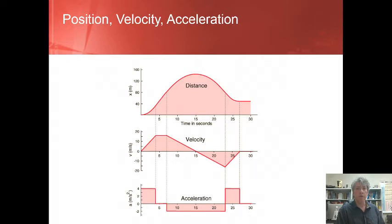For example, the first segment from 0 to 4 seconds has acceleration 4 meters per second squared. This is a simple rectangle, so integration or computing the area under the segment is simple. 4 seconds of width multiplied by 4 meters per second squared of height equals 16 meters per second of area. Thus, the velocity of the object increases by 16 meters per second during the first 4 seconds.